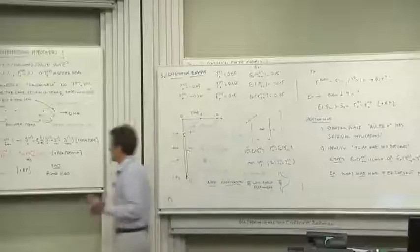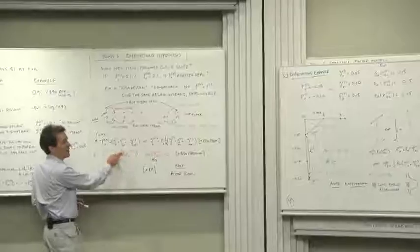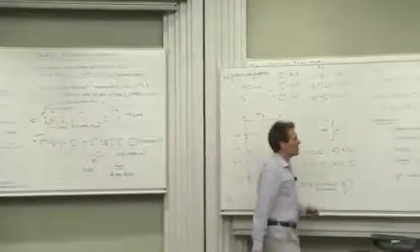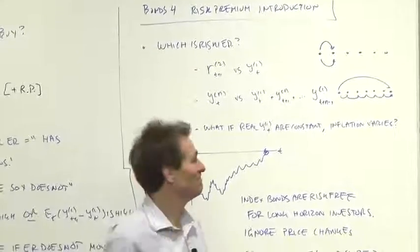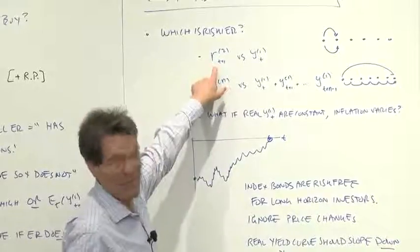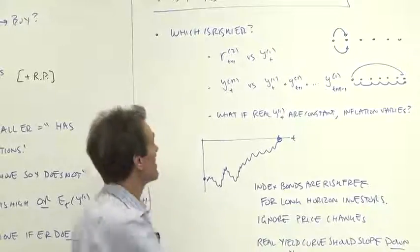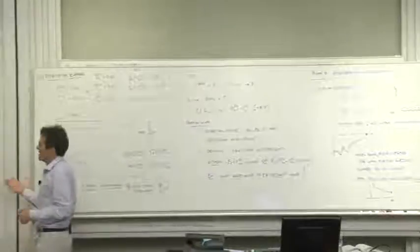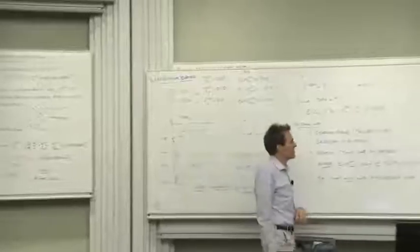The first version of the expectations hypothesis is we thought about holding a one period bond or a long term bond for the next year. So which of those do you think is risky? Is it riskier to hold a two year bond for a year or to hold the one year rate? Well, the two year bond, right? The one year rate, you know what the rate of return is. The two year bond could come out one thing or another. So that makes it look like the two year bond is riskier. We expect the risk premium in the long term bonds. We expect those prices to be lower. We expect the yields to be higher than the expectations hypothesis predicts.